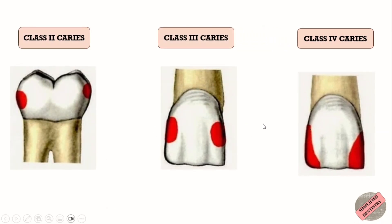All three classes include proximal surface caries, but the location is different. Class 2 caries is on the proximal surface of posterior teeth, whereas Class 3 and Class 4 caries are on the proximal surface of anterior teeth.